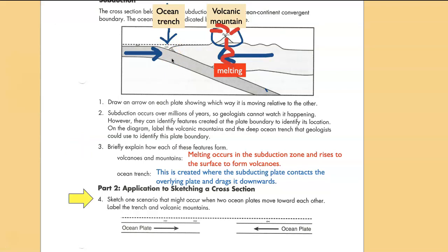Sketch a scenario that might occur between two plates moving towards each other. Now I've done this in the sense that I've made the plate on the right go under the plate on the left, just to show a variation from what's above. But I could have gone with the plate on the left going down. My ocean trench is going to be located here where they contact each other, and my volcanic mountains are going to be over here, because the melting is going to occur down here.